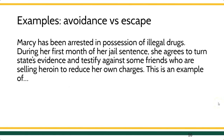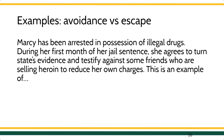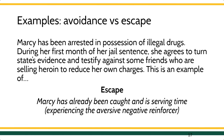So we've got Marcy. Marcy's been arrested for possession of illegal drugs. During the first month of her sentence, she agrees to turn state's evidence and snitch on some friends who are selling heroin to help reduce her own charges. This is probably an example of negative reinforcement. The behavior that we're seeing more of is the testifying behavior — we were having zero of it before, and now we're going to get her to testify.